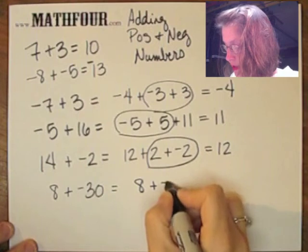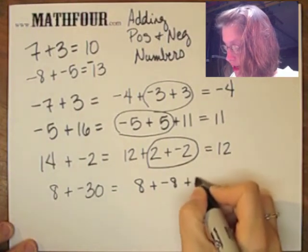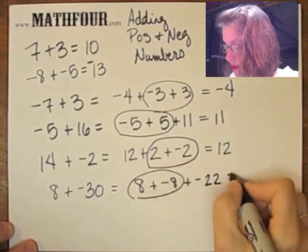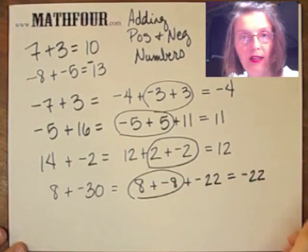8 plus negative 30. Break the 30 into negative 8 and negative 22. So these cancel and you get negative 22.